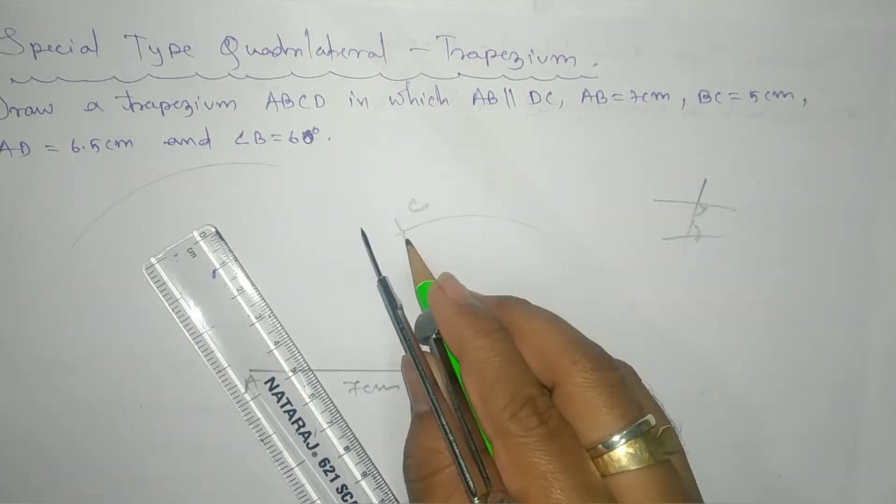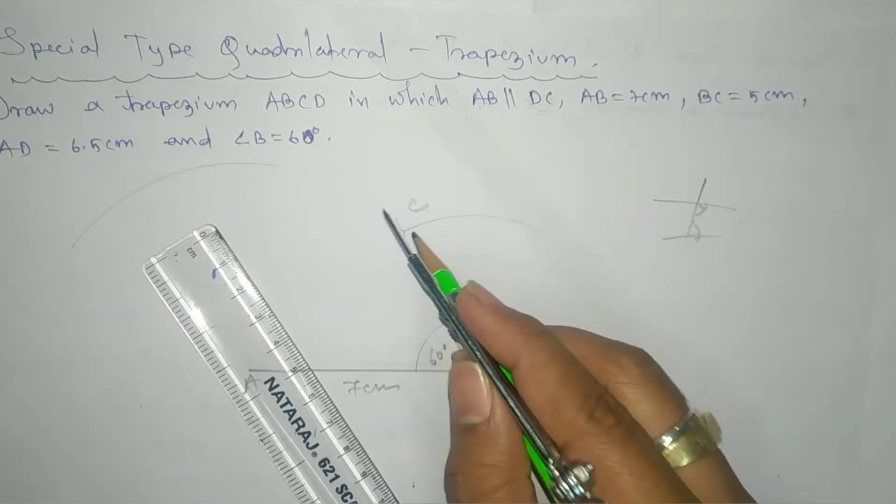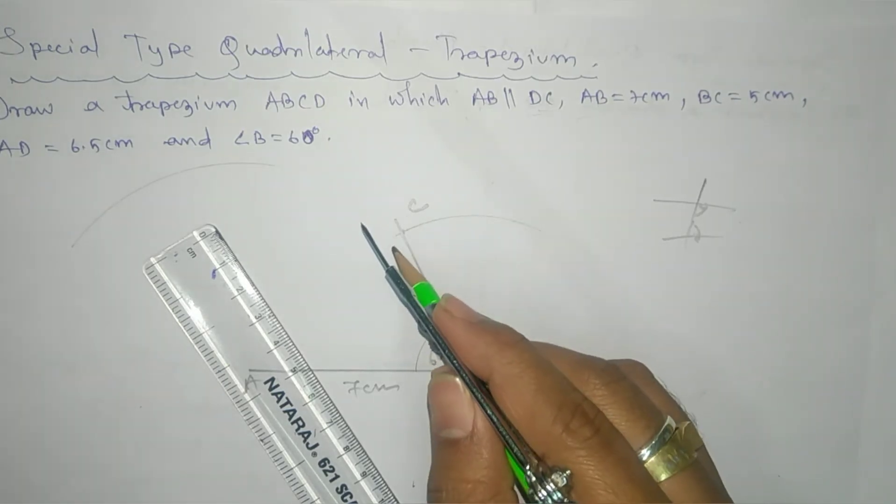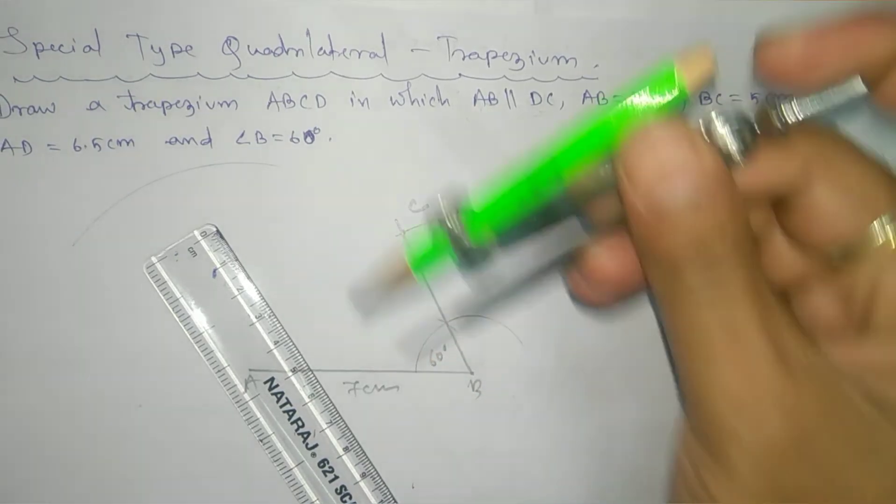to get here 180 degrees, we need 120 degrees. That means here at C, we'll get angle 120 degrees. So we'll use here the compass.